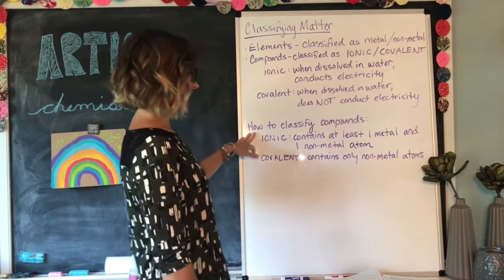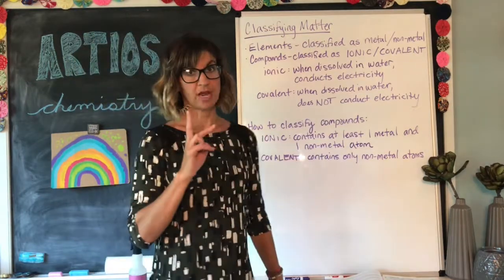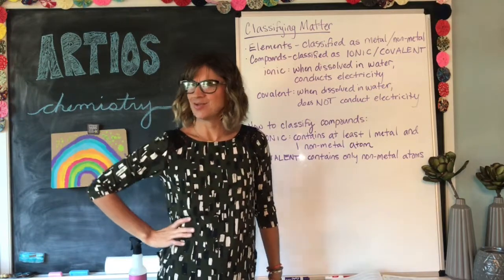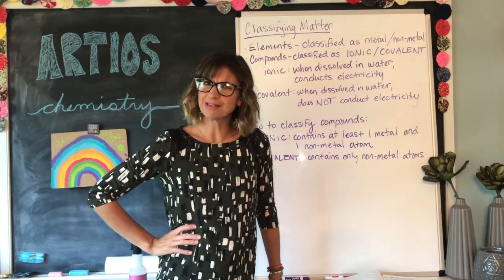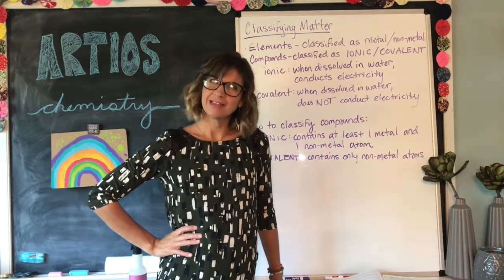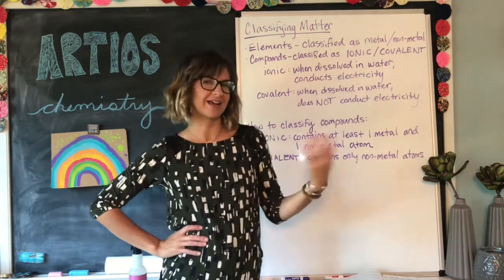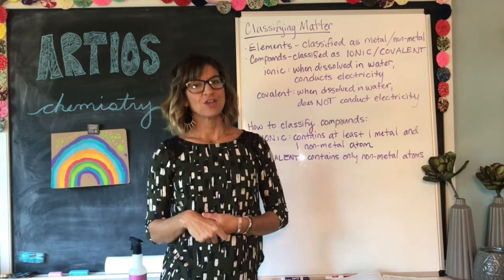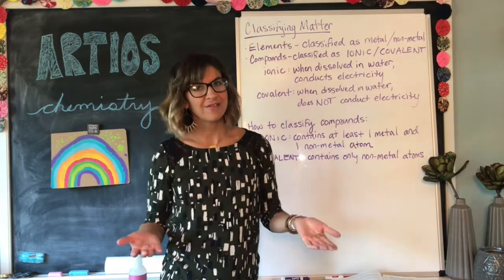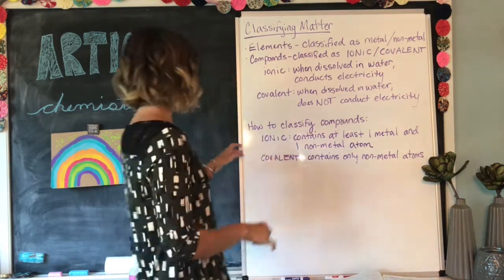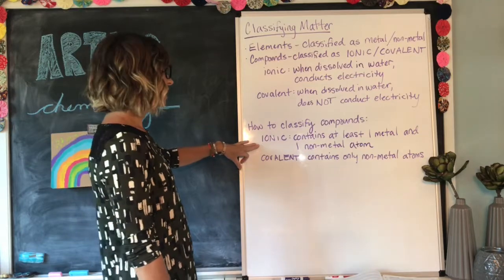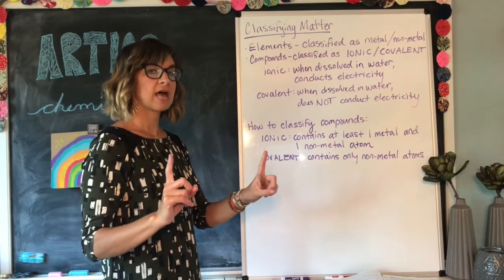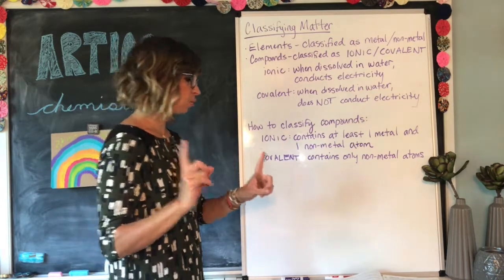So how do we classify compounds? Well, there are two ways. First of all, you can decide you feel like doing an experiment — dissolve the compound in water and see if it conducts electricity, and that's how you'll know if it's ionic or covalent. Or you can just look at the beloved periodic table. For ionic compounds, they will contain at least one metal atom and one non-metal atom — at least one of each.